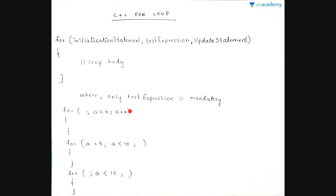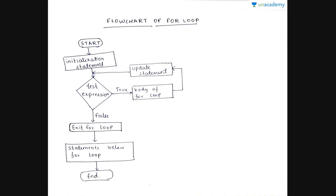Please note that only the test expression is mandatory. That means various simplified forms of the loop are also valid. Now this is the flowchart for the for loop. The initialization statement is checked only during the starting phase of the for loop — afterwards it is not checked. Only the test expression and update statement are evaluated thereafter.